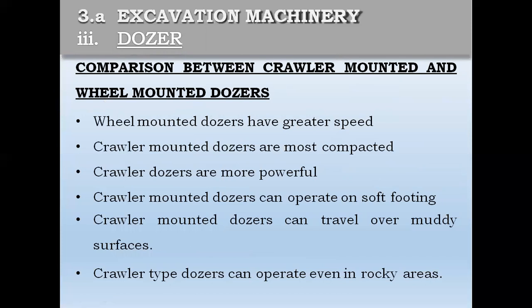Comparing crawler-mounted and wheel-mounted dozers: wheel-mounted dozers have greater speed; crawler-mounted dozers are more compact and more powerful; crawler dozers can operate in soft footing and can travel over muddy surfaces; crawler type dozers can operate even in rocky areas. Wheel type dozers are faster but less capable on difficult terrain.